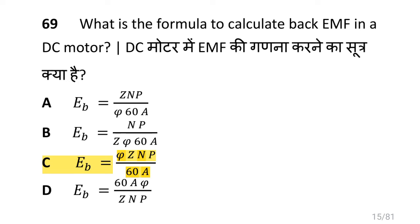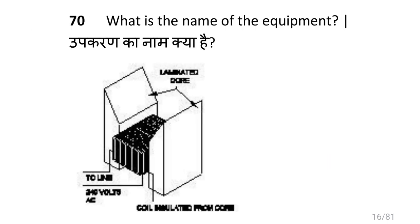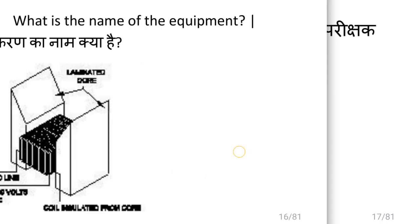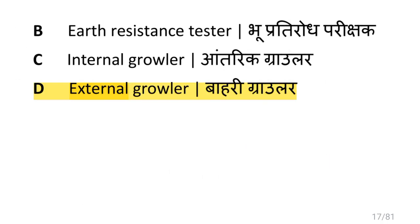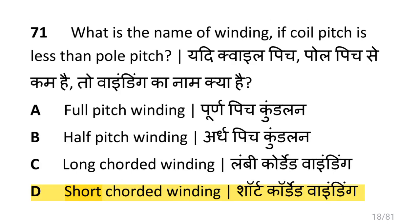What is the formula to calculate back EMF in a DC motor? Eb equals phi times Z times P divided by 60A. What is the name of the equipment used to test armature winding? That is external growler. What is the name of winding if coil pitch is less than pole pitch? That is short chorded winding.